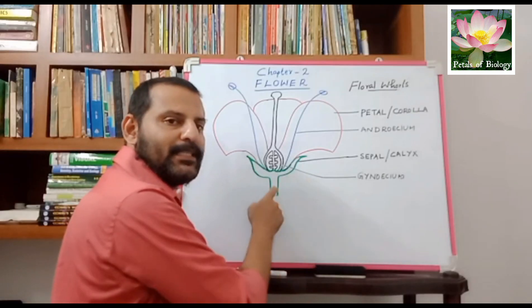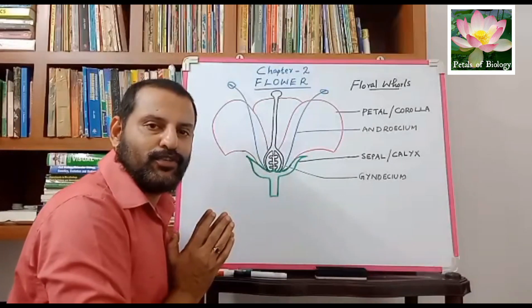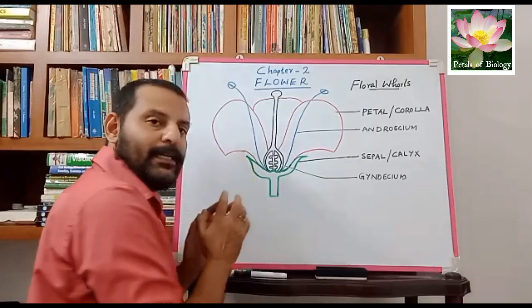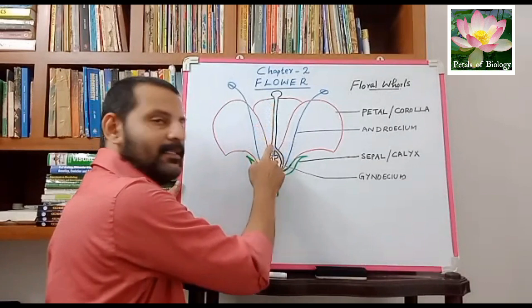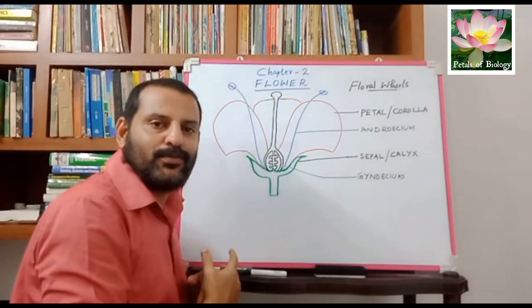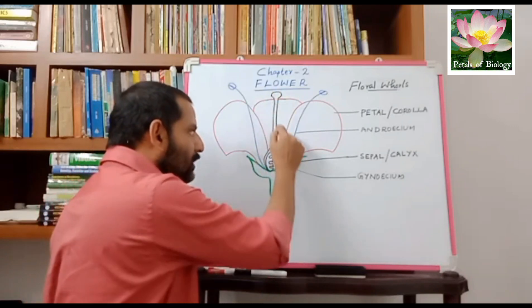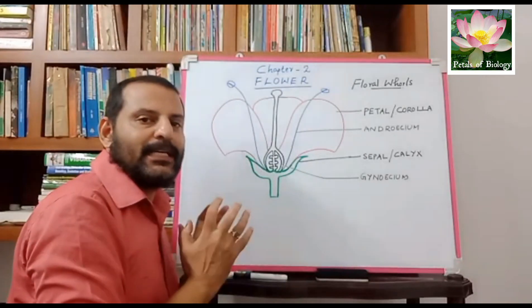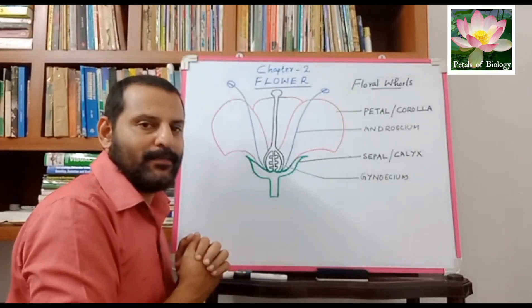The fourth and very important last part is the gynoecium. The gynoecium is the female reproductive part. It consists of an ovary, a style, and a stigma — these three together constitute the gynoecium, and you can also call this entire structure the pistil. We will learn the detailed structure of the gynoecium in the coming class.